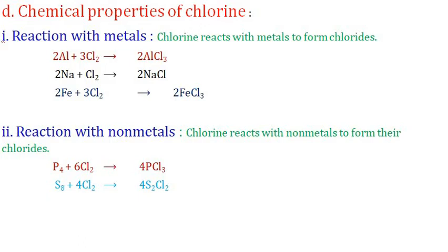Chemical properties of chlorine: chlorine reacts with metals to form corresponding chlorides. For example, aluminium, sodium, and iron react with chlorine to form aluminium chloride, sodium chloride, and ferric chloride respectively. Chlorine reacts with non-metals — phosphorous and sulfur react with chlorine to form phosphorous trichloride and sulfur chloride.